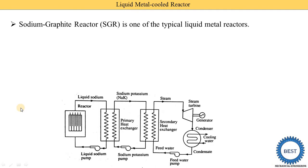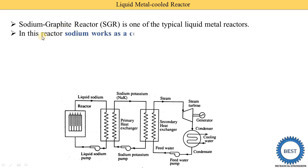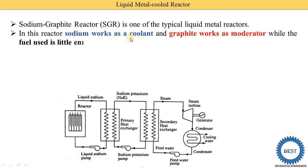The sodium graphite reactor is one typical liquid metal reactor, where sodium is used as a coolant and graphite is used as a moderator. In this reactor, sodium works as the coolant, graphite works as the moderator, and the fuel used is slightly enriched uranium.